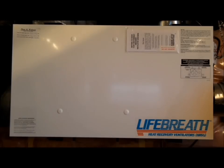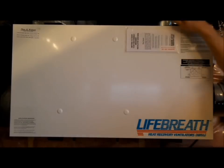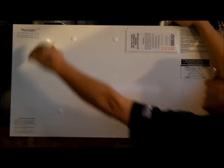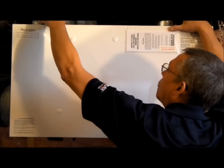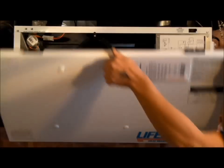In this tutorial, we're going to discuss the maintenance routine of your LifeBreath HRV system. In order to get into your LifeBreath HRV system, you have two black clips on top of the unit. Pull up, forward, and up, and the door will drop down.